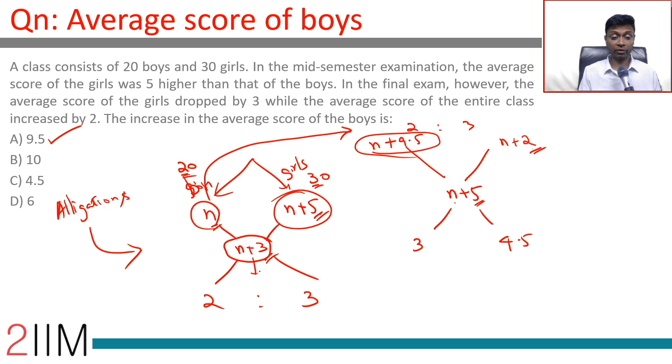You've got your weighted average. It's a wonderful way of thinking about weighted average. If you're mixing 80 and 90 in the ratio 2 is to 3, you can do 2 into 80, 3 into 90 by 5, or you can say the difference is 10. I'll break this in the ratio 2 is to 3, so that is 4 and 6, so this number should be 86.